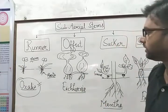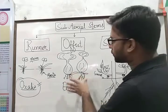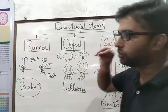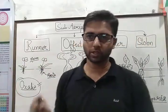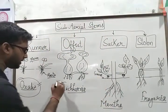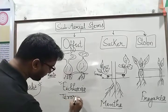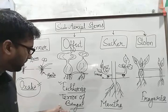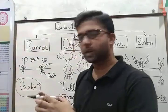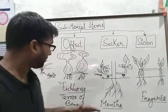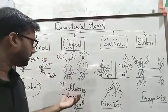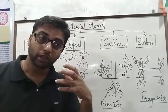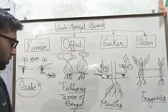Another natural sub-aerial stem phenomenon found in submerged plants is the offset method. Offset are like runners, but runners run through a very long distance whereas offset runs through a very short distance — up to one or two structures. The best example is Eichhornia crassipes, also known as the terror of Bengal. It is called this because it grows at a very high rate; whenever present in any water body such as a pond, it uses almost all of the oxygen in the water body.